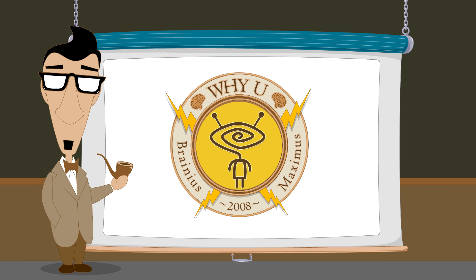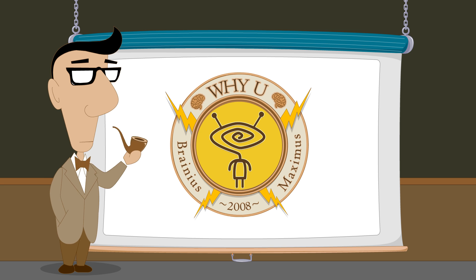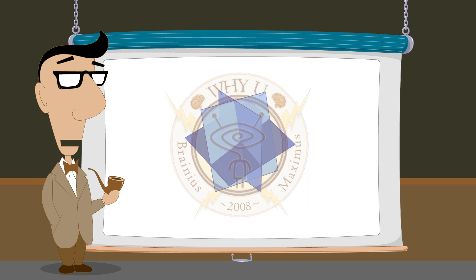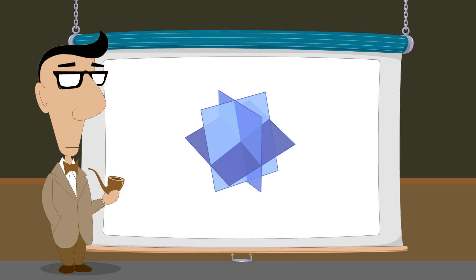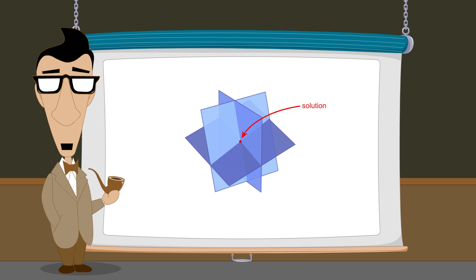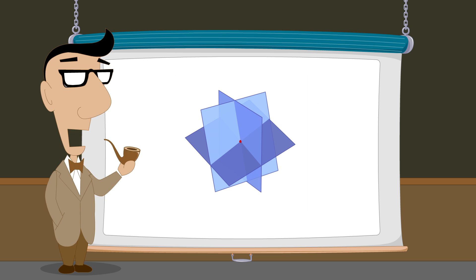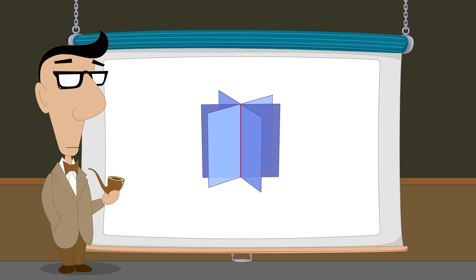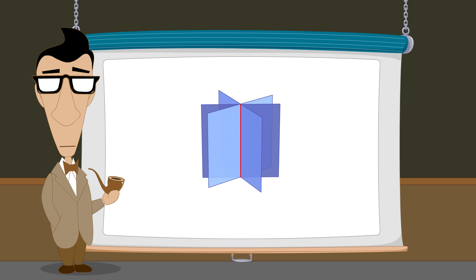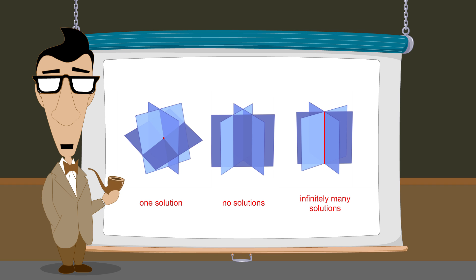Hello, I'm Professor Von Schmohawk and welcome to Why U. So far we have seen how substitution and elimination can be used to find a solution for a system of three linear equations in three variables. But how do we know that this solution is unique? Perhaps these three planes intersect in such a way that there are an infinite number of solutions and this solution was only one of them. In this lecture, we will show how to recognize whether a system of equations has one solution, no solutions, or an infinite number of solutions by the type of results we get when solving the system.